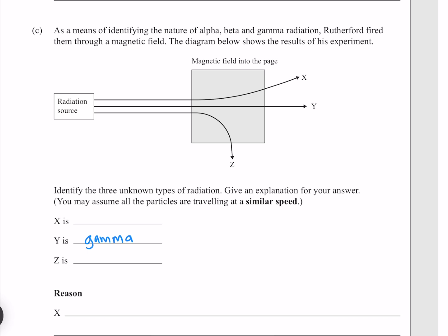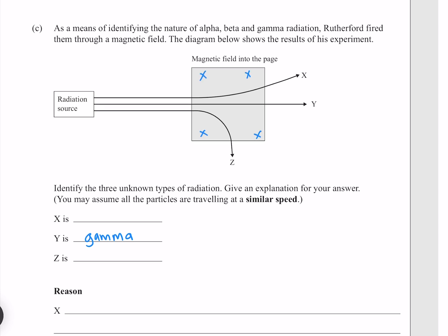Now we know that the magnetic field is into the page. So if we use the right hand rule, taking our right hand and pointing our fingers into the page, to simulate an upwards deflection, we can point our palm upwards. Doing so, you'll find that your thumb is pointing towards the right, which indicates the direction of positive charge movement, meaning that a positive charge traveling towards the right will be upwardly deflected, which is what our X is doing. So it must be our alpha particle.